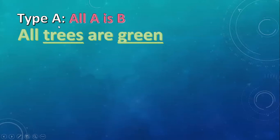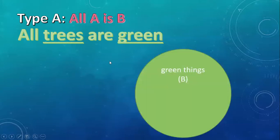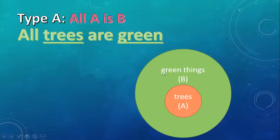Here's one of the types. If you think about what 'all trees are green' is saying — think about all the green things. We'll put all green things in this big circle. What I'm saying is trees are inside of that big circle. So in this little circle we put all the trees. We might have another circle out here for all grass, and another circle that is all emeralds. One of the things in this big circle of green things is trees. That's what this statement is getting across. So that's type A.